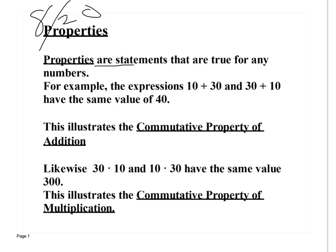Properties are statements that are true for any numbers. For example, 10 plus 30 and 30 plus 10 both equal 40. This is what we call the commutative property of addition.